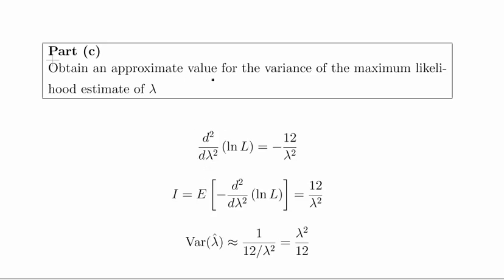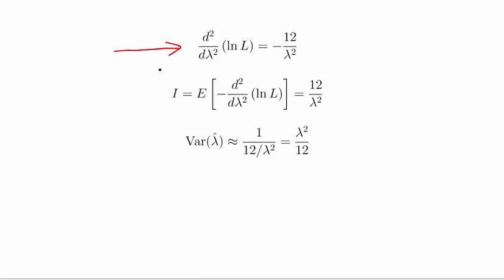To obtain an approximate value for the variance of the MLE of lambda, we calculate the Fisher information. We already found the first derivative in the previous part, so differentiating again with respect to lambda gives −12/λ². The Fisher information is the expected value of minus that, which is 12/λ². The variance is approximated by 1 over the Fisher information, giving λ²/12.